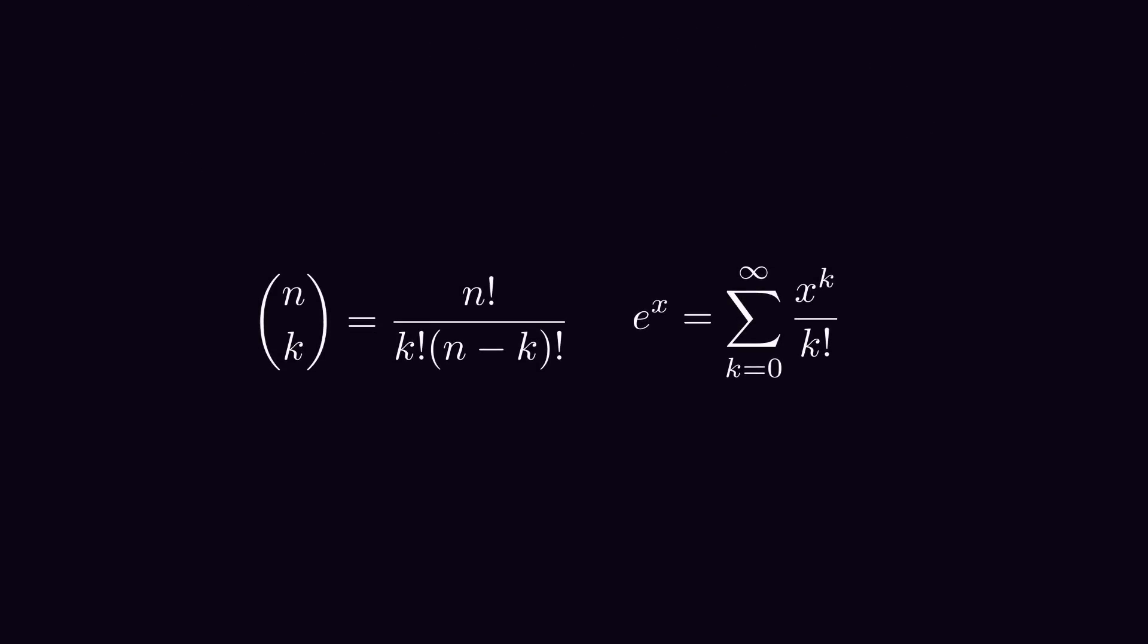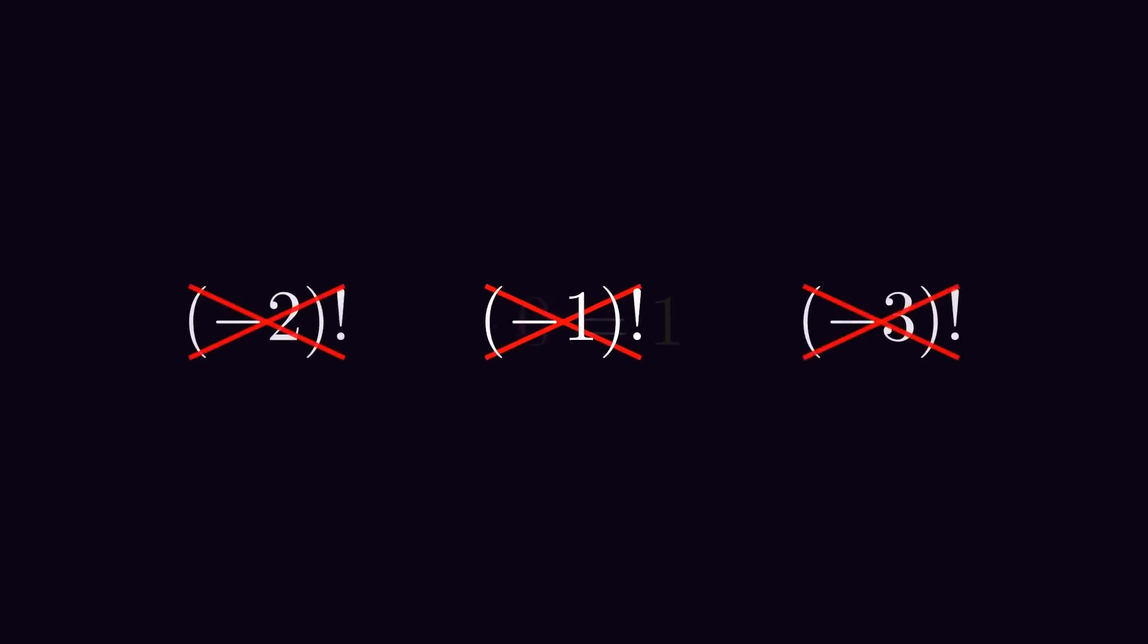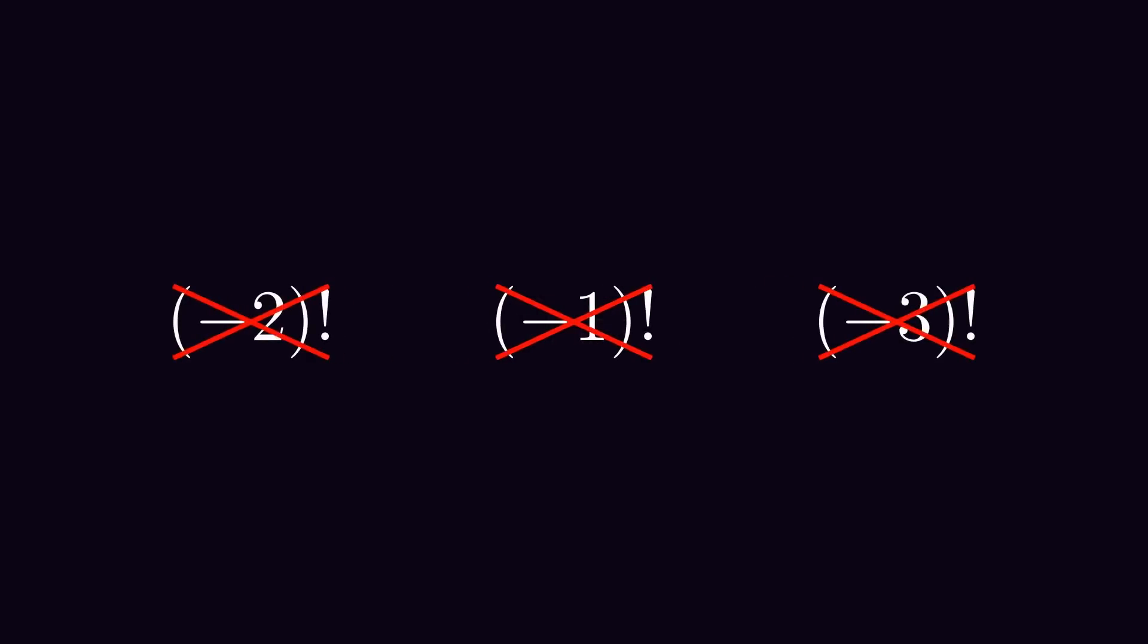Now you might be asking, what is negative 1 factorial then? Or negative 2 factorial? Let's see. Negative 1 factorial times 0 will be 0 factorial, so... That's not really possible. So negative 1 factorial is not defined and likewise negative 2 factorial, negative 3 factorial and so on are not defined either.